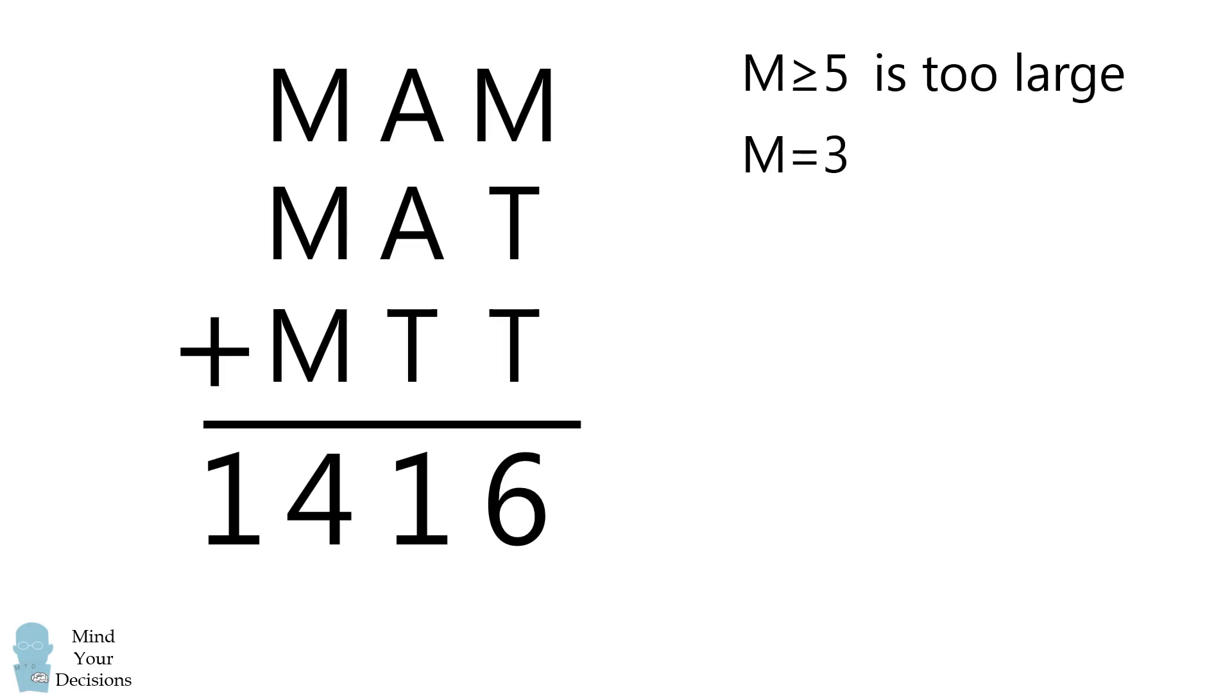What if M equals 3? In that case, the largest value of the sum will be 1197, and that's too small because we need the sum to be 1416. Therefore, M equals 3 cannot be a possibility and M less than or equal to 3 can also be eliminated.